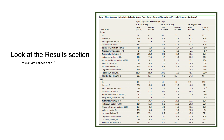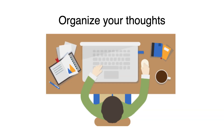When looking at your scholarly article, check the results section for data that can be visualized. Once you have your sources, take time to organize your thoughts. Create a basic layout of your design. What content do you want to place in each box or section? Organize your thoughts ahead of time. This can save you time in the long run.